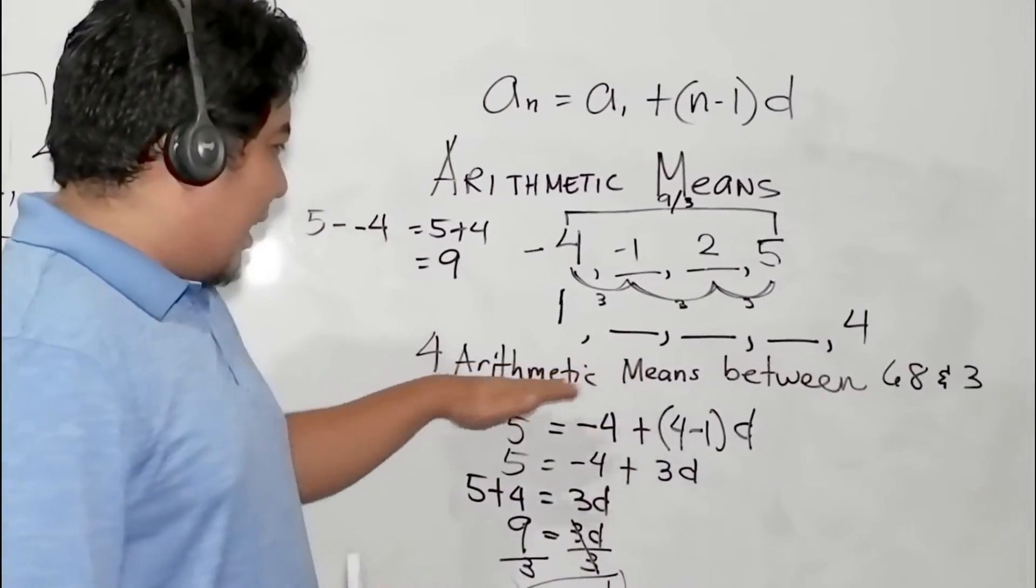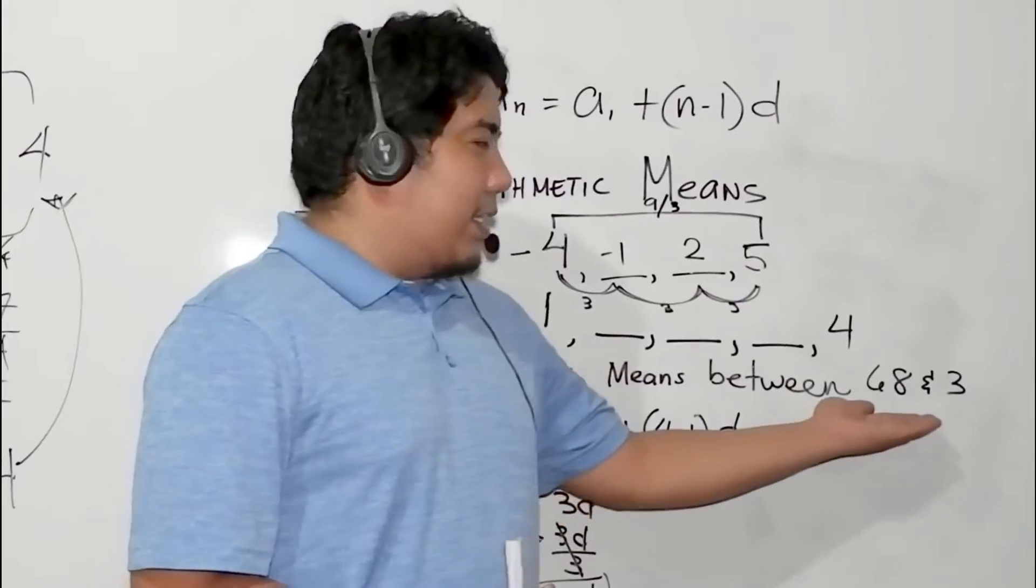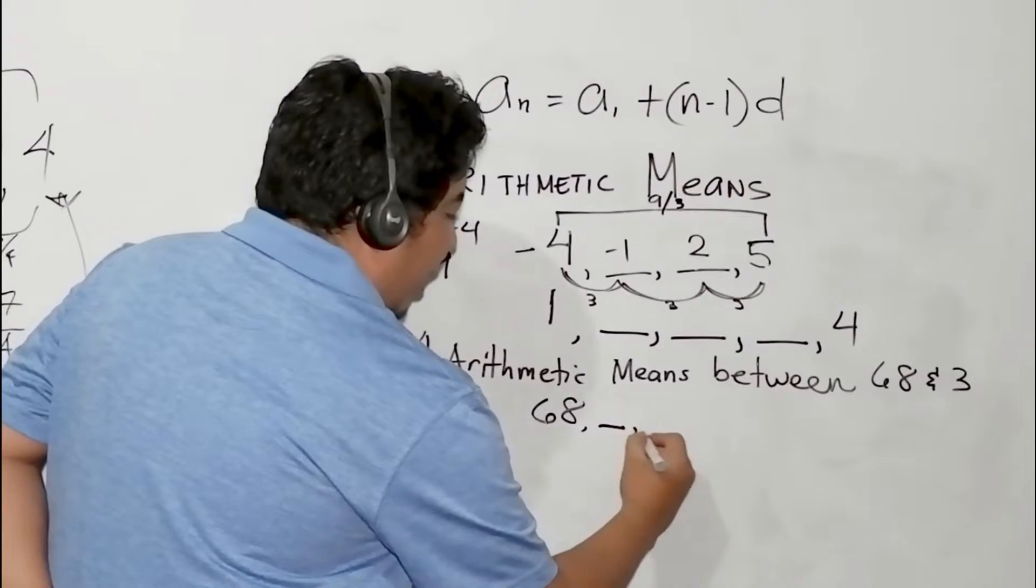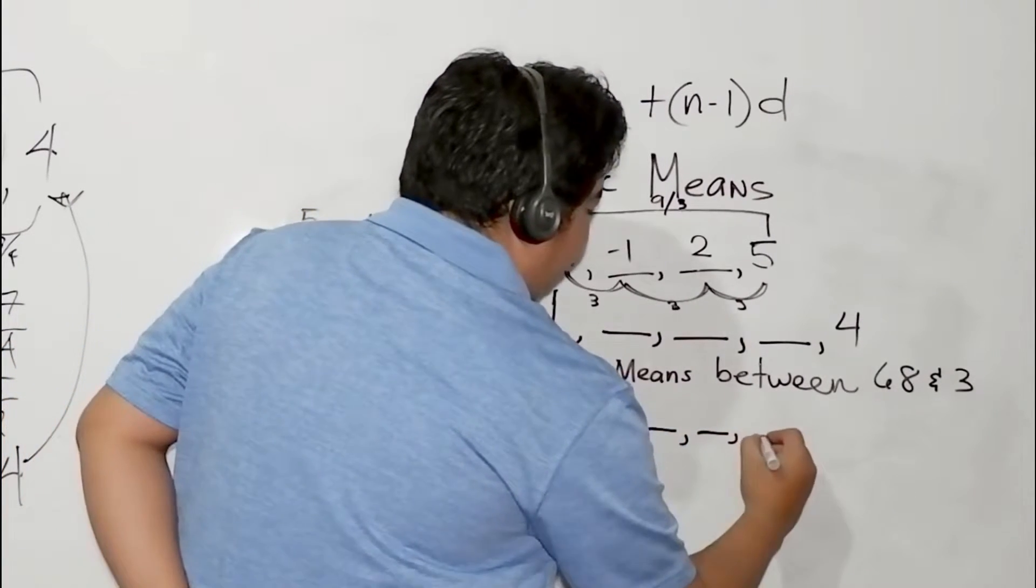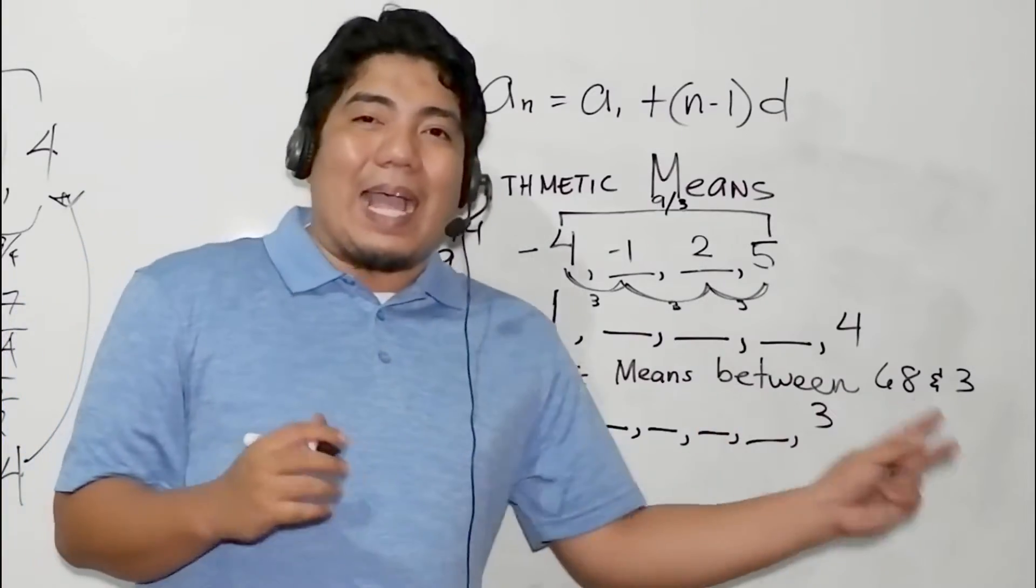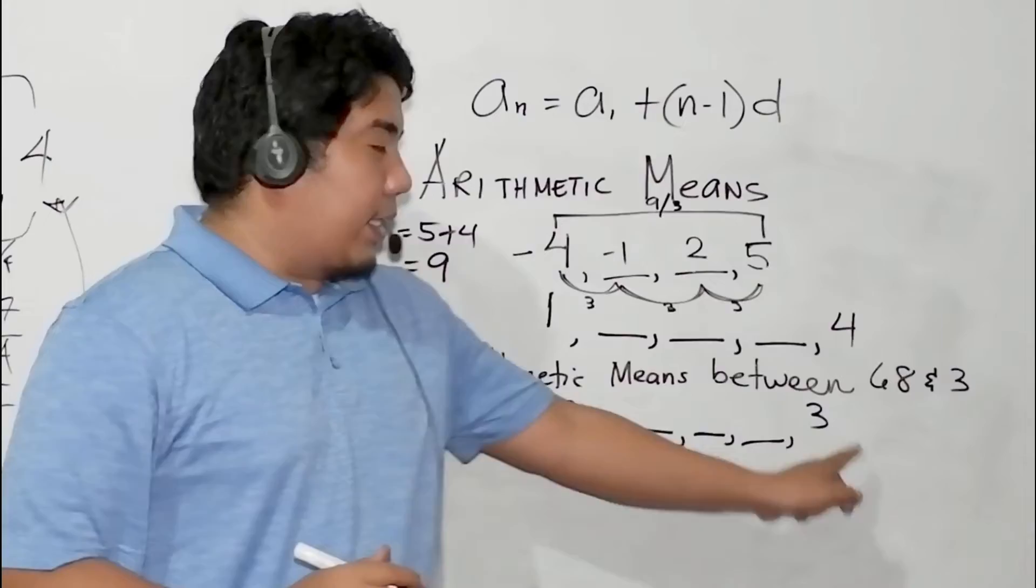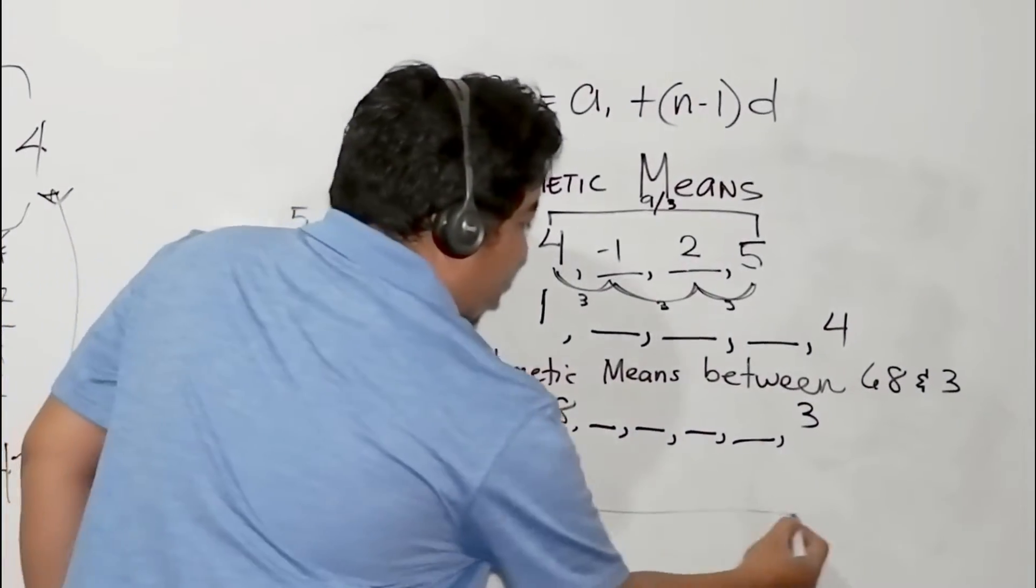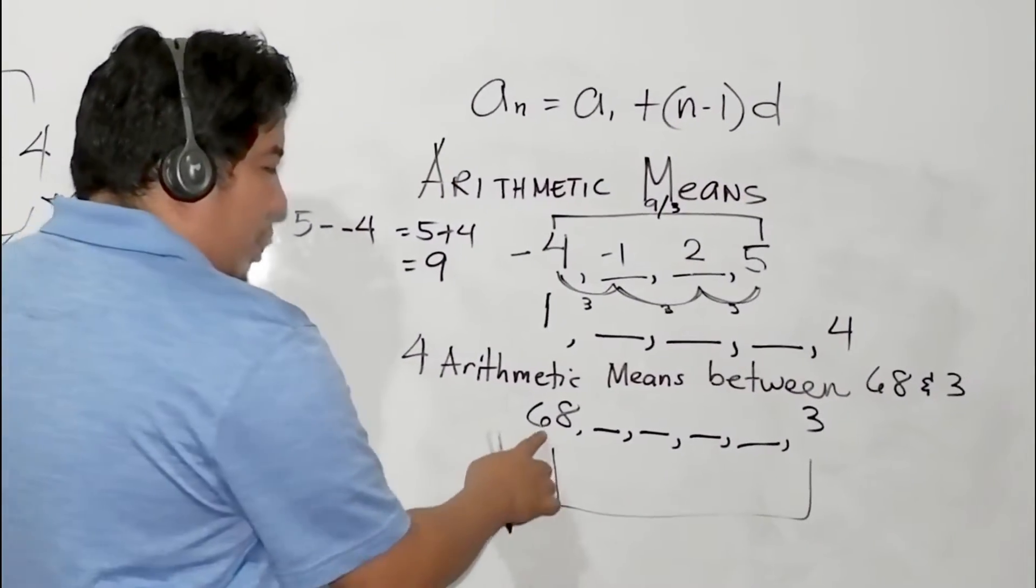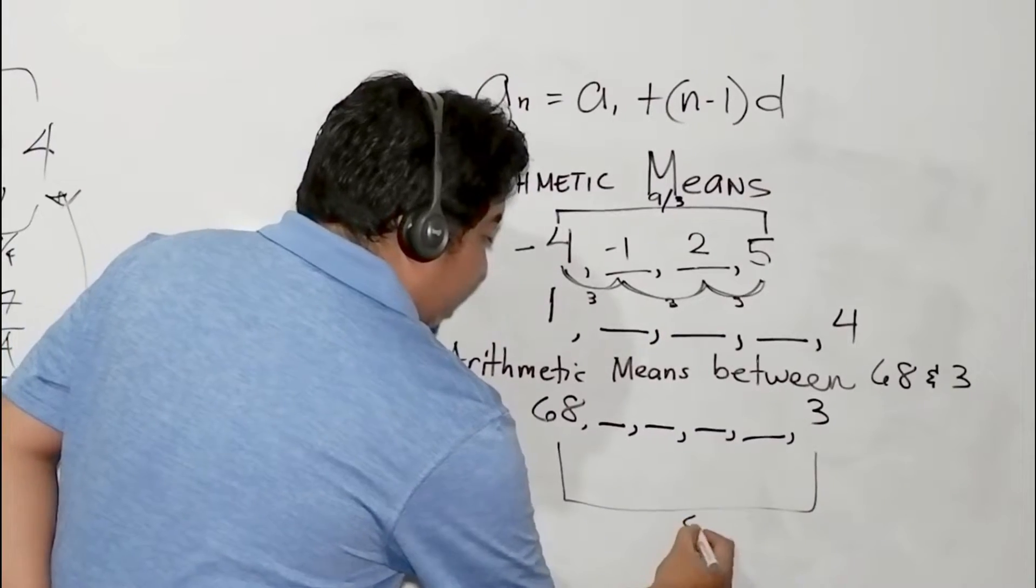Now, let us consider this last example. 4 arithmetic means between 68 and 3. We have 68, 1, 2, 3, and 4 before we put our 3. So that is 4 blanks between the two given terms. First thing you should do is you subtract 68 and 3. So 68 minus 3 that will give you 65.